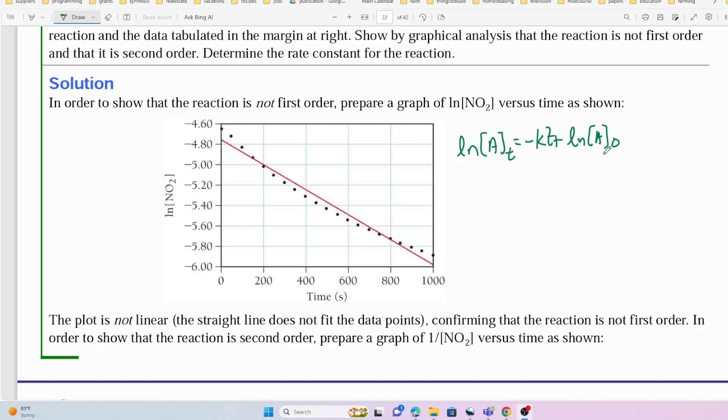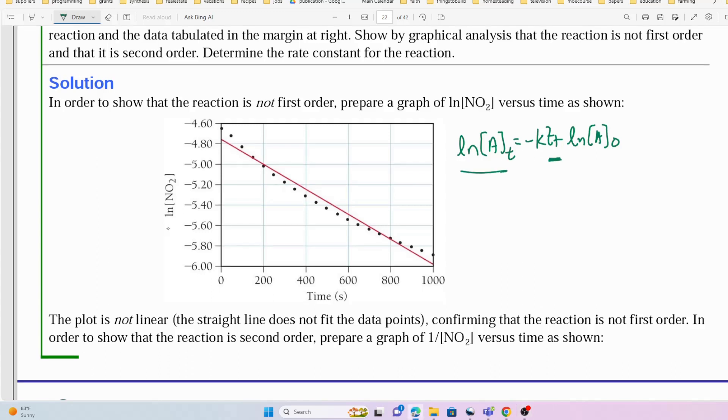So we see here that if we plot time versus ln of the concentration of NO2, like we did in the previous example, where t is on the x-axis and ln[A] is on the y-axis, we would expect to get a straight line.